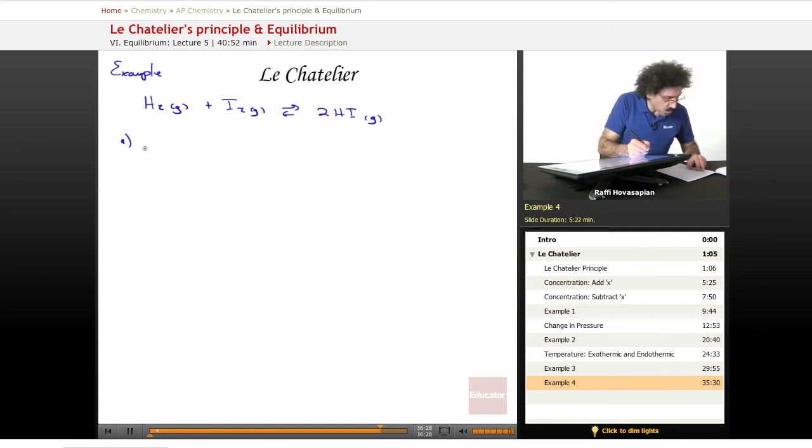So what happens when H2 gas is added? If H2 gas is added, the system is going to move in a direction that depletes what I added. It wants to offset it. In order to deplete H2, it has to move to the right, so it's going to shift right.